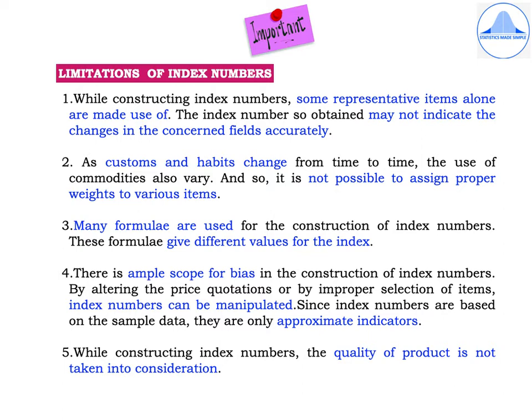Third, many formulae are used for the construction of index numbers and these formulae give different values for the index, as you would have seen in the problems we worked out. Fourth, there is ample scope for bias in the construction of index numbers — by altering the price quotations or by improper selection of items, index numbers can be manipulated. Since index numbers are based only on sample data, they are only approximate indicators. Fifth, while constructing index numbers, the quality of the product is not taken into consideration.